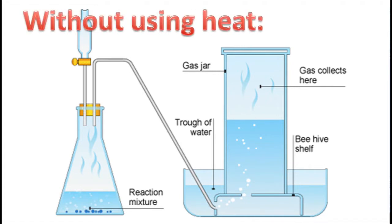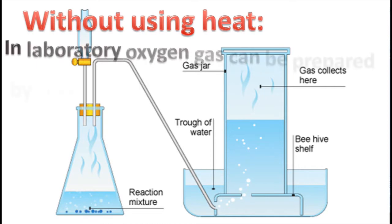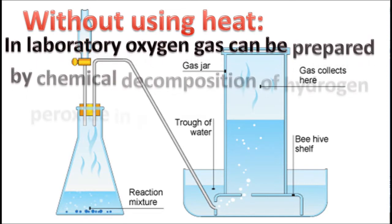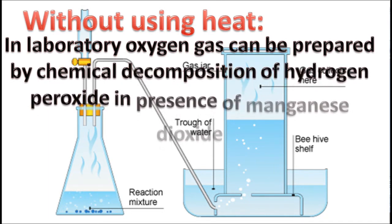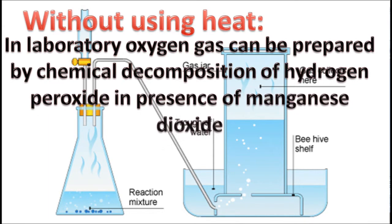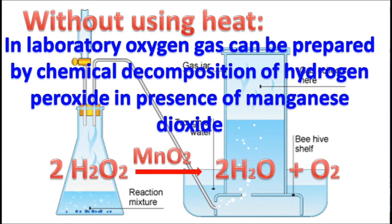The first method is without using heat. Oxygen gas can be prepared by chemical decomposition of hydrogen peroxide in the presence of manganese dioxide. The chemical reaction shows two molecules of hydrogen peroxide decomposed in the presence of manganese dioxide as a catalyst into water and oxygen gas.